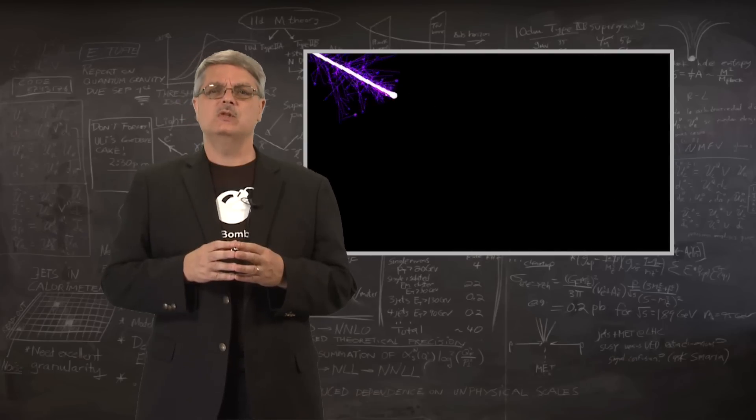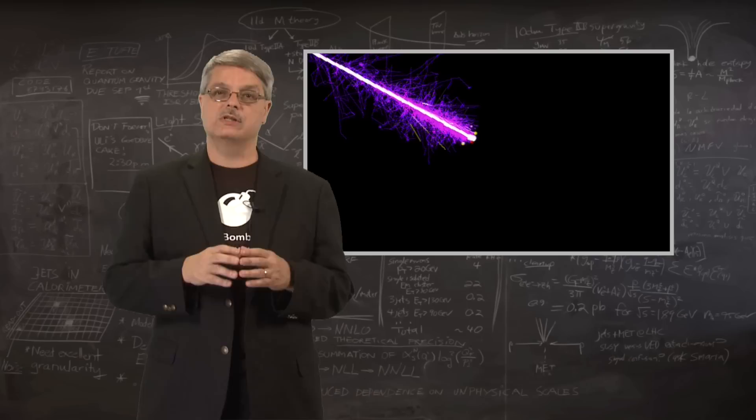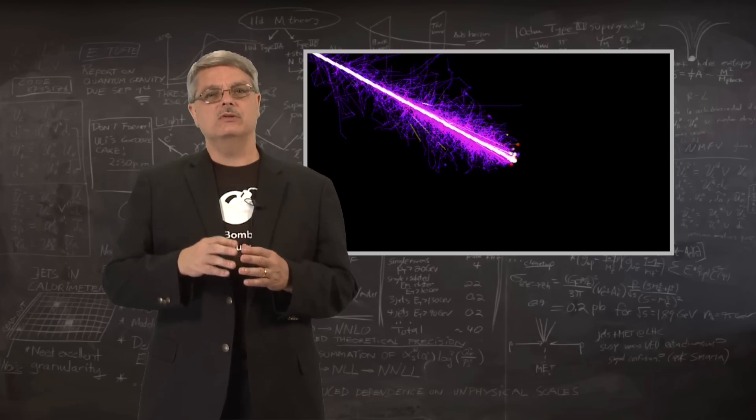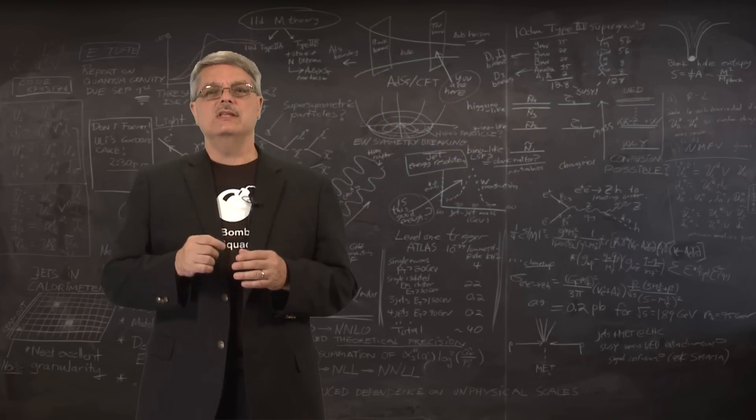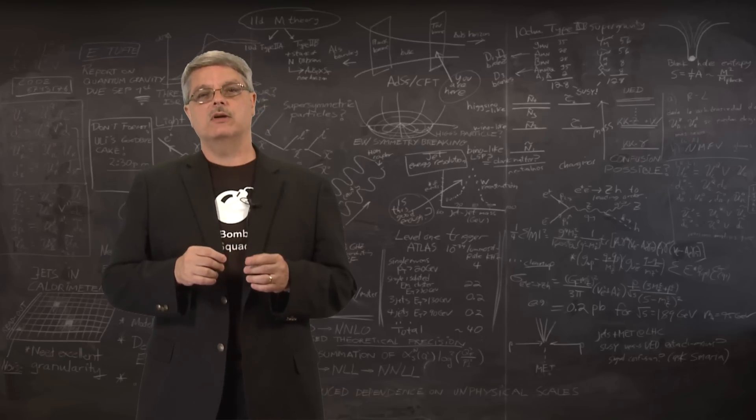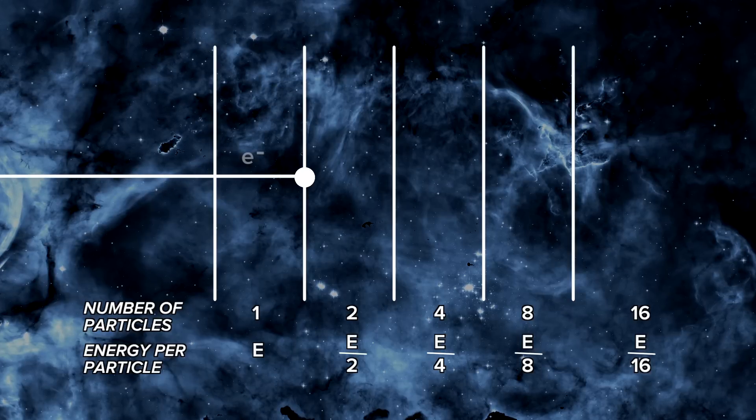For instance, one of these particles hits an atom and two or five or even more particles come out. These new particles can then interact with more atoms. Using the simple scenario in which a single particle interacting with an atom makes two particles, we can see how a single particle makes many. Starting with a single electron, one particle goes to two, which goes to four, then eight, then sixteen, and so on.